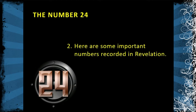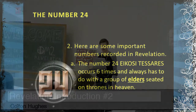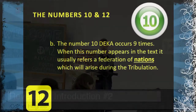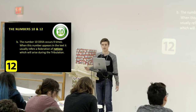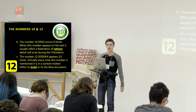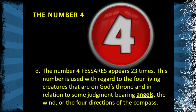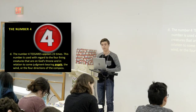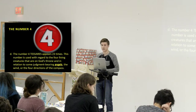Let's look at some important numbers that occur a lot in Revelation. The number 24 occurs six times and always has to do with a group of elders seated on thrones in heaven. The number 10 occurs nine times and usually refers to a federation of nations which will arise during the tribulation. The number 12 appears 23 times, and virtually every time it is mentioned, it is in a context related either to Israel or to New Jerusalem. The number 4 appears 23 times, used with regard to the four living creatures on God's throne and in relation to judgment-bearing angels, the wind, or the four directions of the compass.